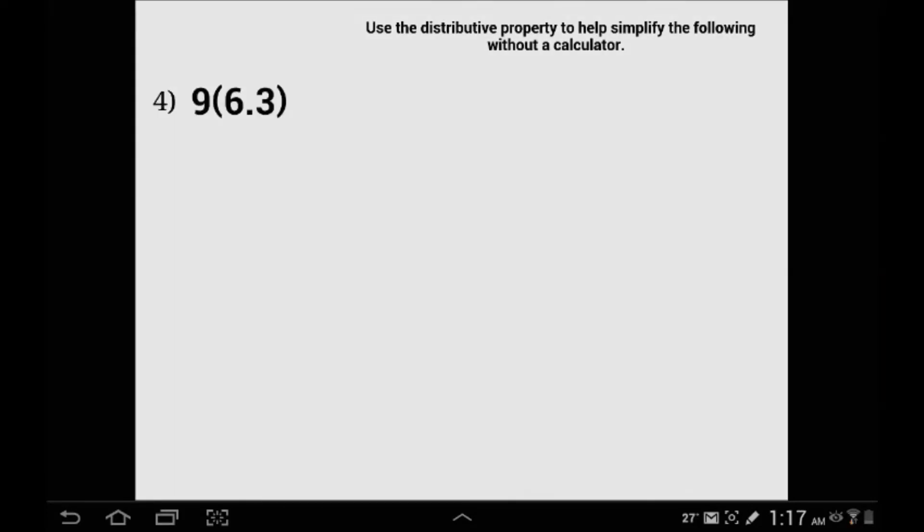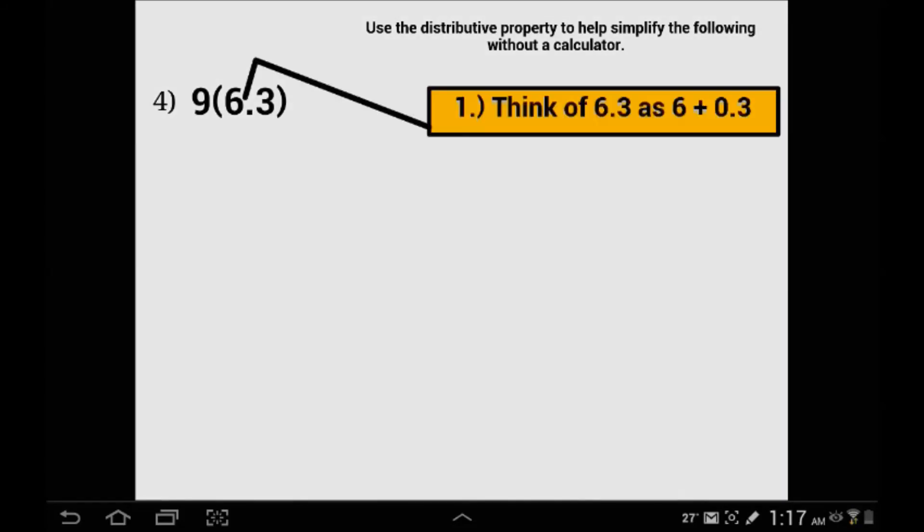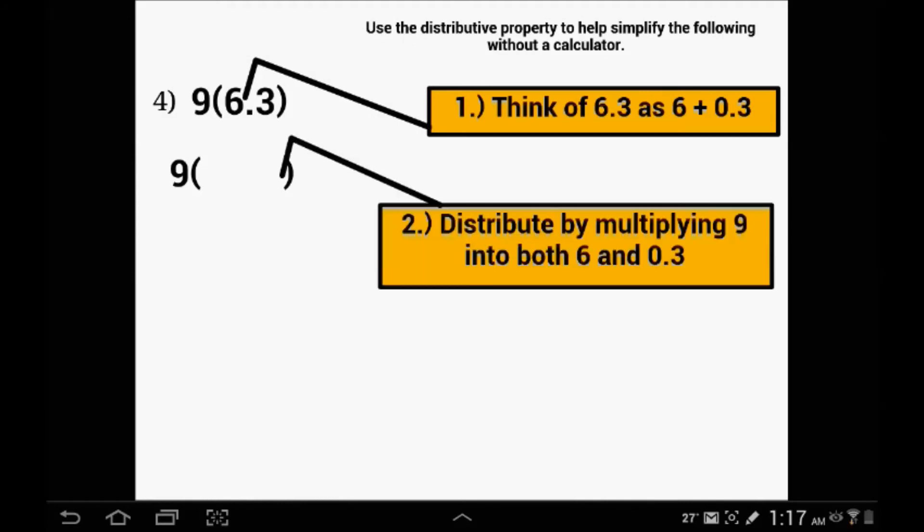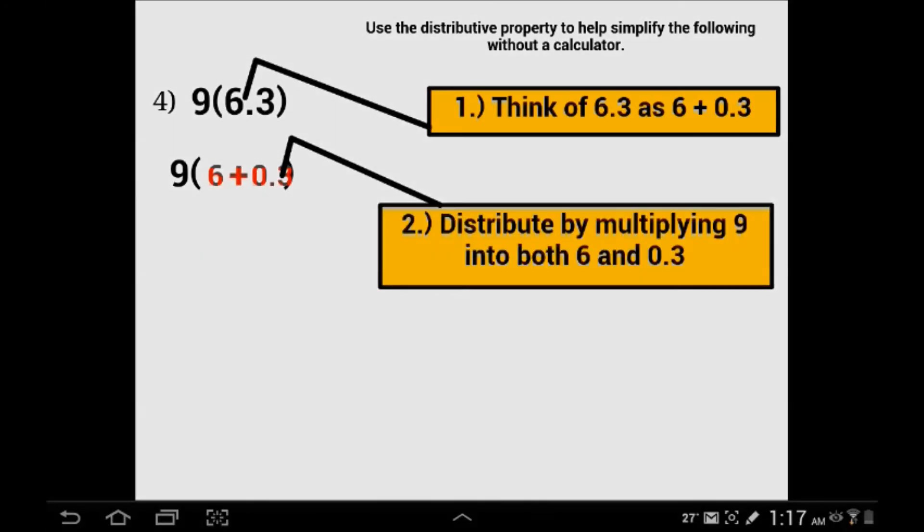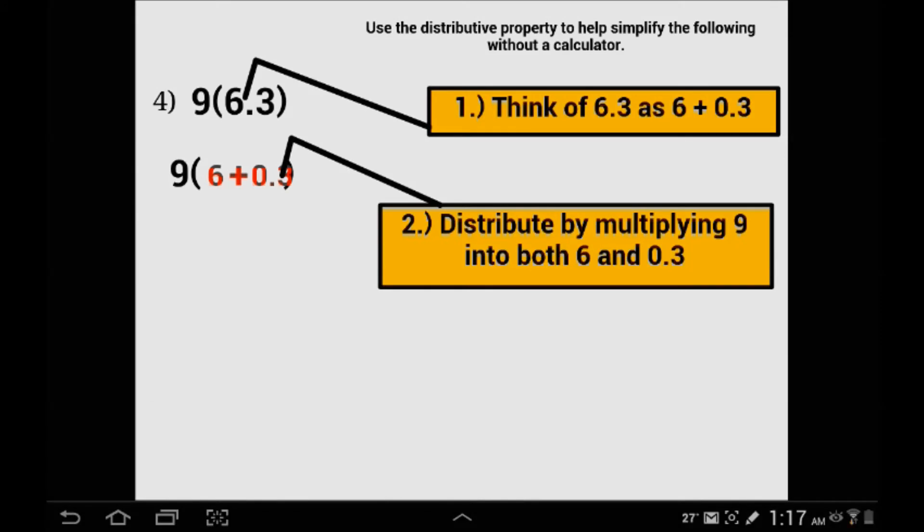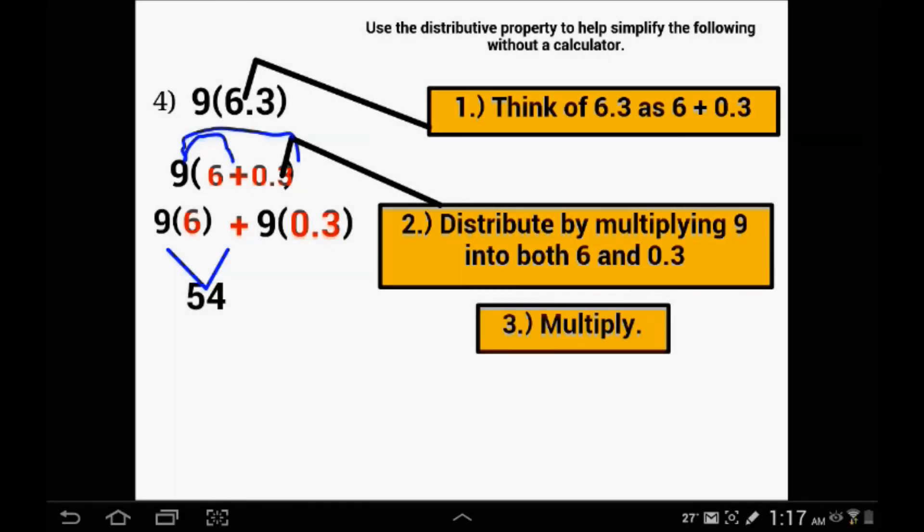In our next example, we have a decimal. Just like we did with the money, we are going to break up the decimal. We are going to break up 6.3 into 6 plus 3 tenths. Write that in the parenthesis. We are going to distribute the 9 into everything: 9 times 6 and then 9 times 3 tenths. 9 times 6 is 54.